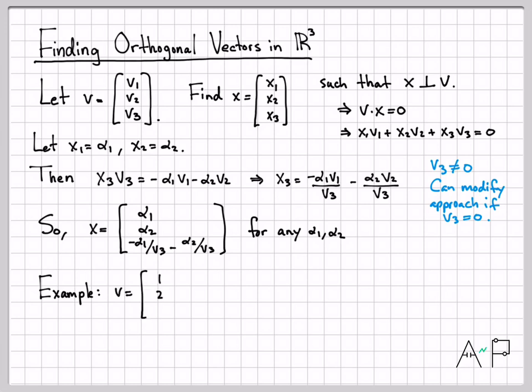As an example, let's go ahead and do an example. Let's say that we're given the vector (1, 2, 3), and I want to find some orthogonal vector to it. There's actually an infinite number of orthogonal vectors. Let's just find one.